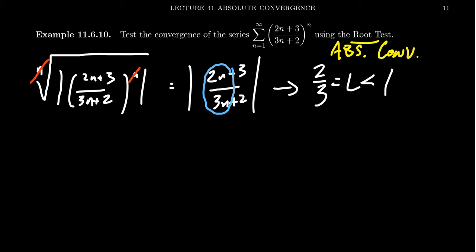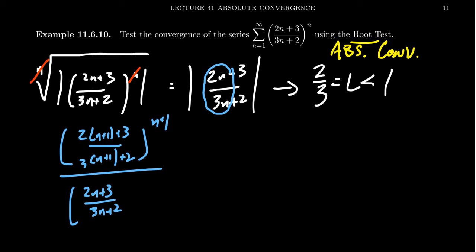The root test works out really nicely here. Alternatively, if we wanted to use the ratio test, we'd get (2(n+1) + 3)/(3(n+1) + 2) raised to the (n+1) power, and this sits above (2n + 3)/(3n + 2) to the nth power.